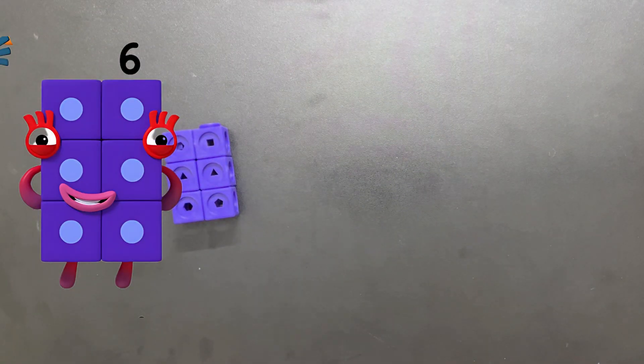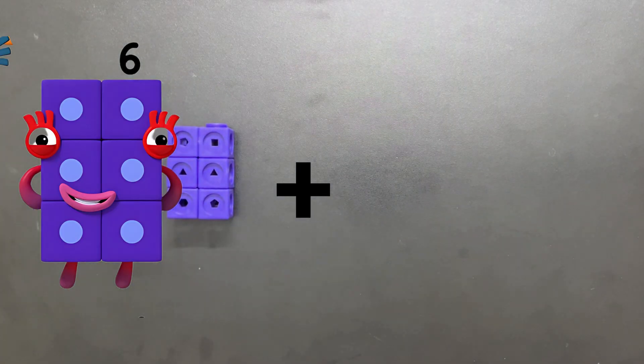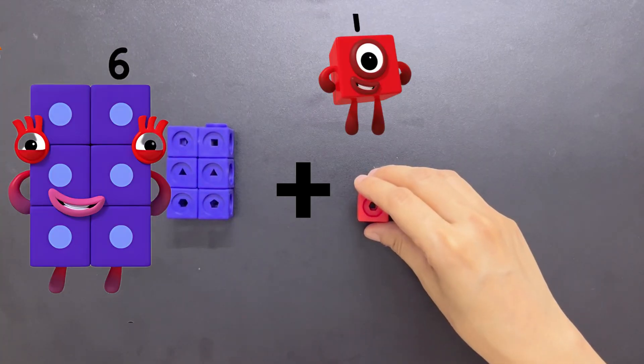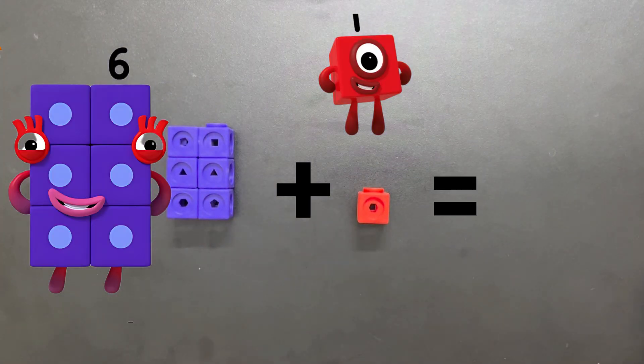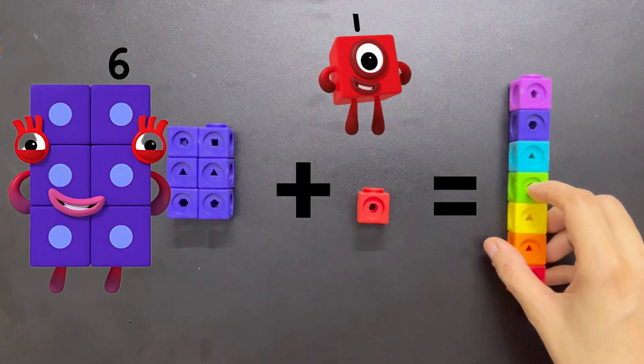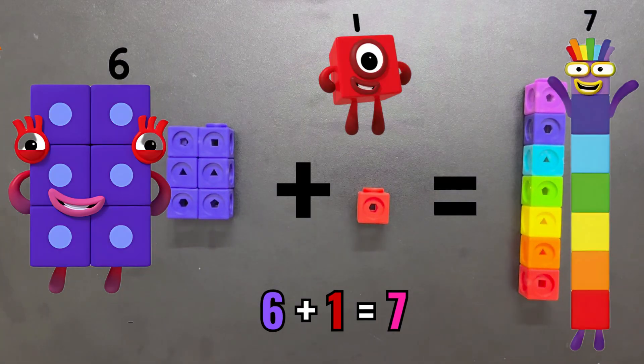Number Seven is lucky and magical. He's made up of seven different colored blocks just like a rainbow. He believes in lucky sevens and loves making rainbows appear in the sky.